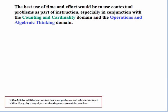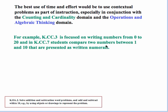The best use of time and effort for this standard would be to use the contextual problems involved as part of your regular instruction, especially in conjunction with the counting and cardinality domain and the operations and algebraic thinking domain. For example, the third standard in the counting and cardinality domain is focused on writing numbers from 0 to 20, and in standard 7 of that same domain, students compare two numbers between 1 and 10 that are presented as written numerals.